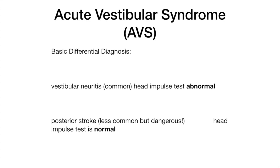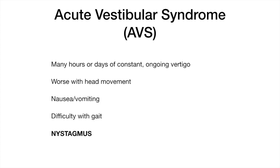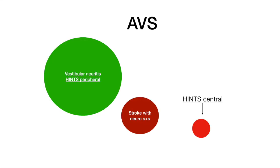We don't want to send somebody home with a diagnosis of vestibular neuritis when they're really having a stroke. The acute vestibular syndrome is when the patient has many hours or days of ongoing continuous vertigo or dizziness which gets worse with head movement, nausea and/or vomiting, difficulty walking, and nystagmus. Most of these patients will end up having vestibular neuritis, and they'll be confidently diagnosed with the HINTS exam by virtue of an abnormal head impulse test, giving an overall HINTS peripheral result. Patients who present in the first several days after the onset of vestibular neuritis have nystagmus.